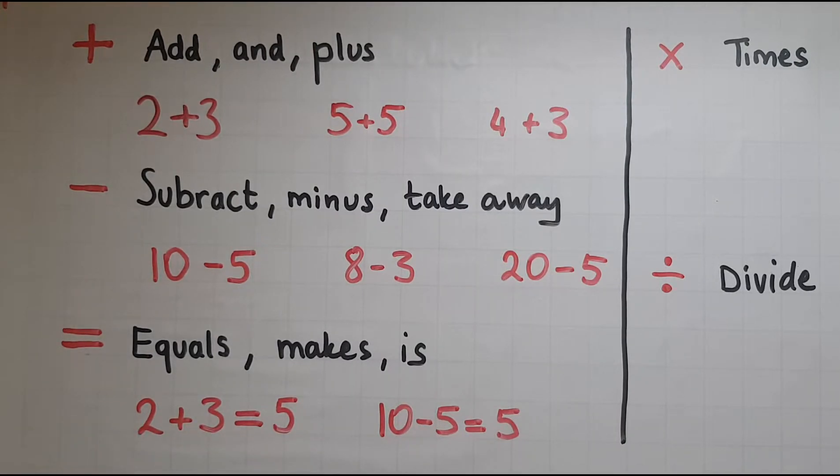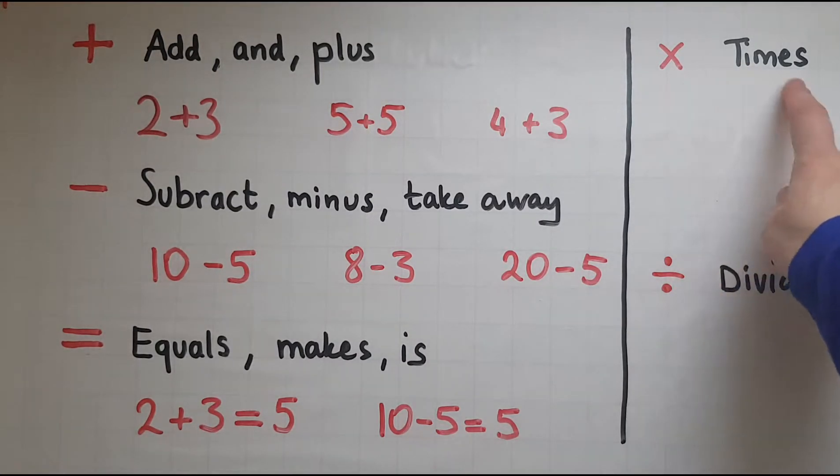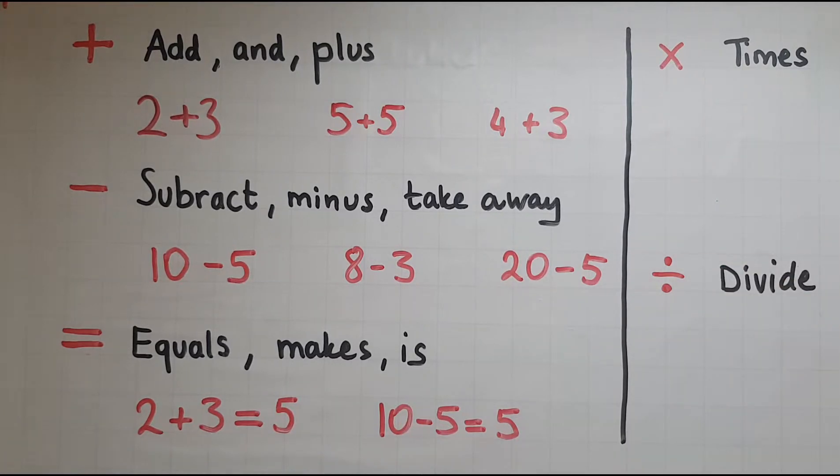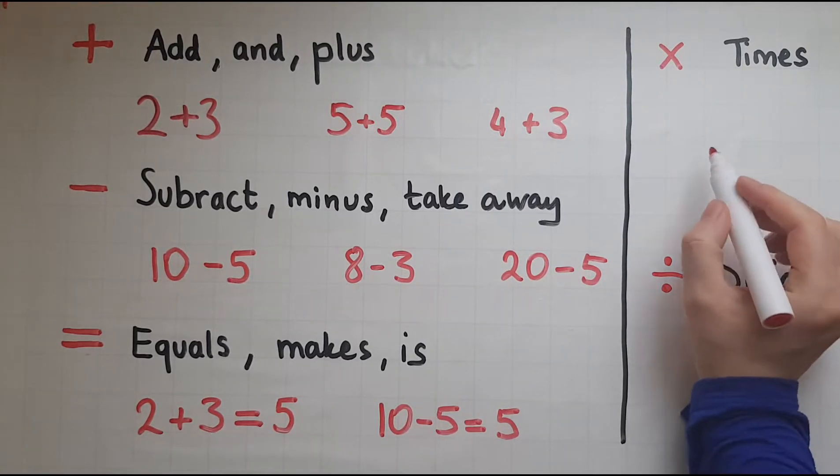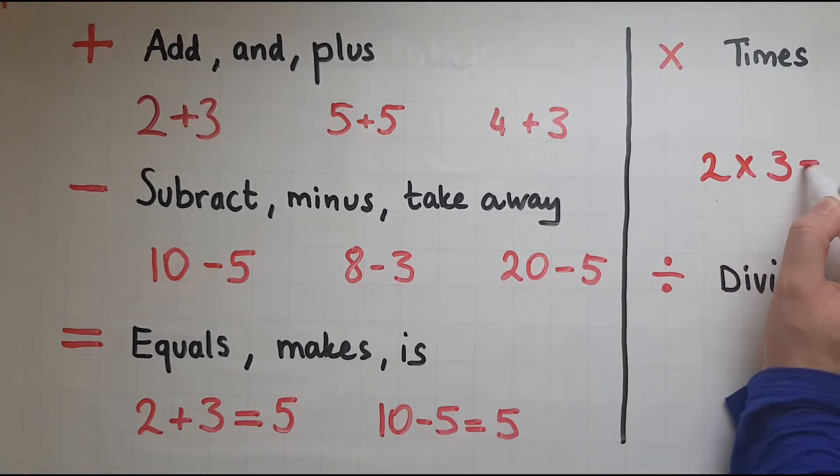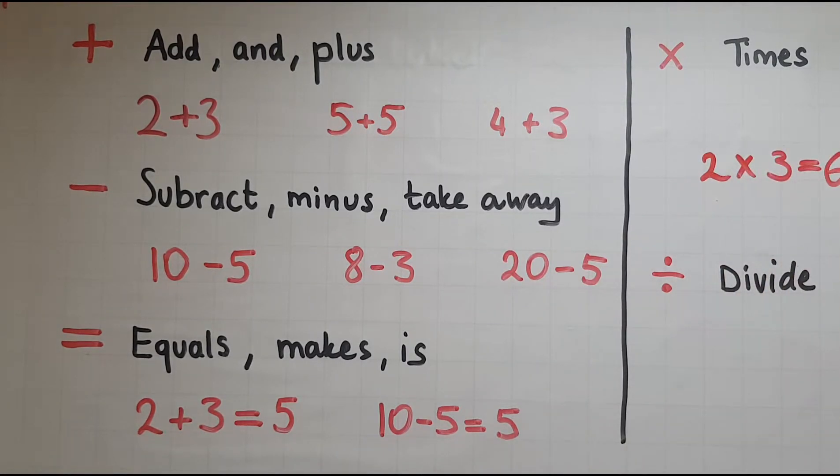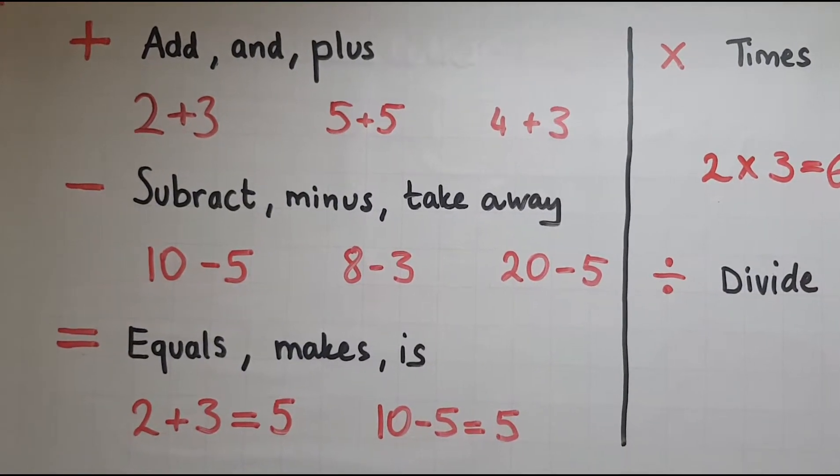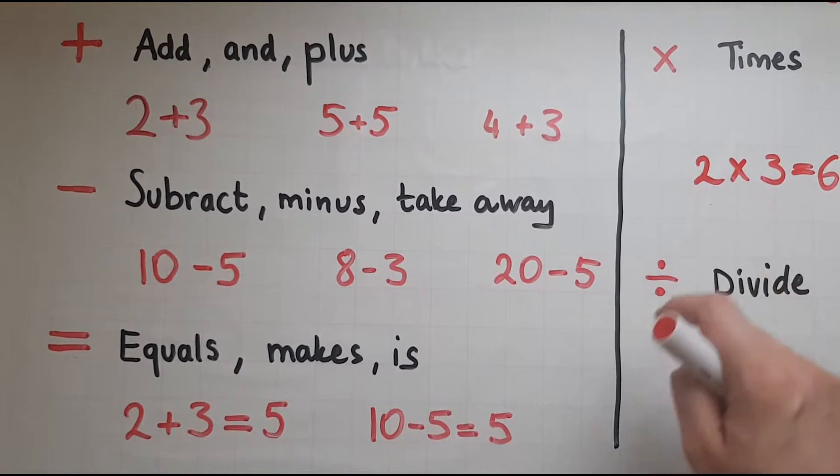In this video, we'll look at these other two. This symbol is the times symbol. 2 times 3 equals 6. That's how and when we use that symbol.